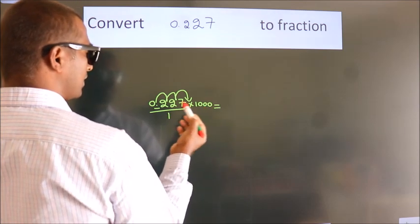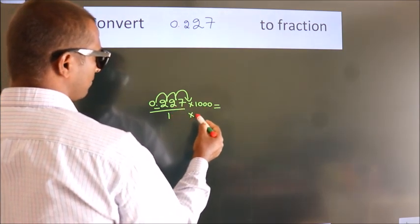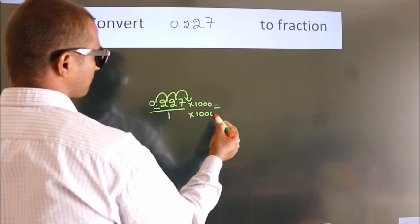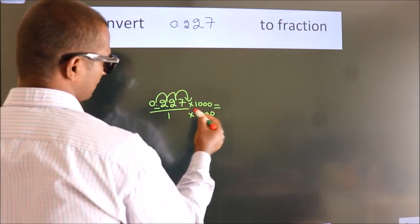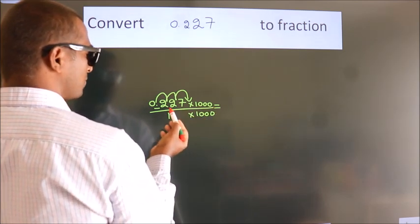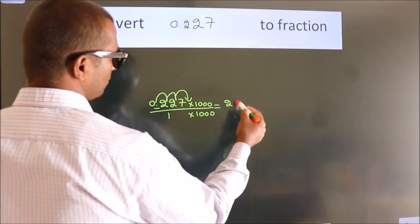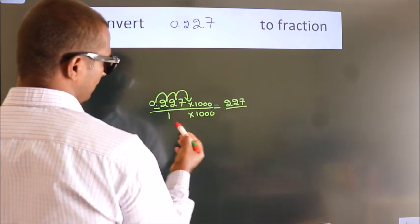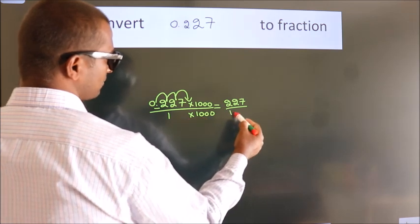Whatever you are multiplying in the numerator, in the denominator also do the same. So, 0.227 into 1000 gives 227, and 1 into 1000 gives 1000.